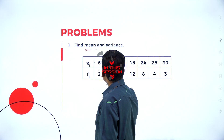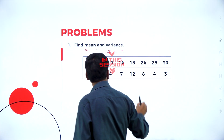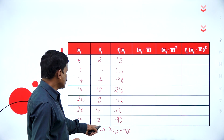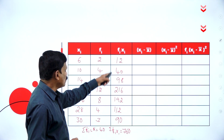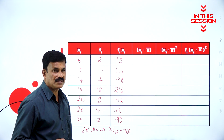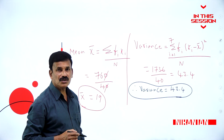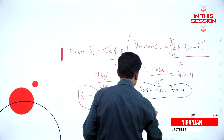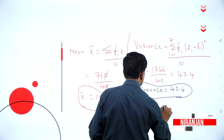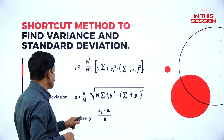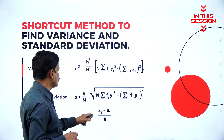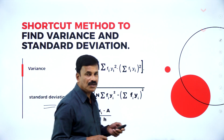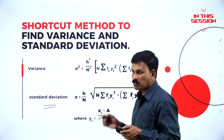Find the mean then variance for the given data. What is given: xi and fi. Sigma fi is n equals 40, sigma fi xi is equal to 76, variance is equal to 43.4. The mean x-bar — variance yi is equal to xi minus a divided by h. This is the formula we are going to use to solve the problems.